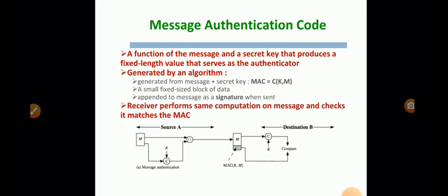So in the receiver side you will get the message value as well as the MAC. That is represented as MAC of K, M. Then in the receiver side what we are going to do is we already have the MAC value which is sent by the sender. And we have the message. For the message once again find out the MAC value. Compare both the MAC values. If both are equal means we can say it is an authenticated message.